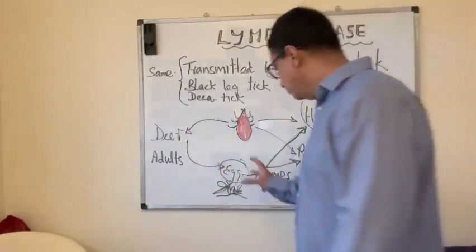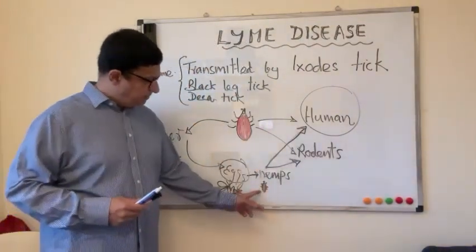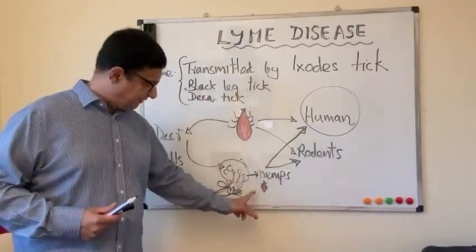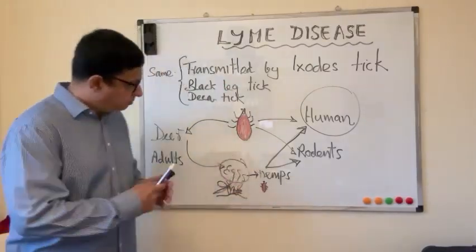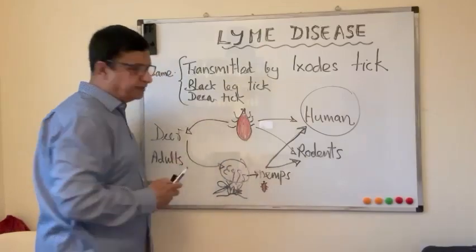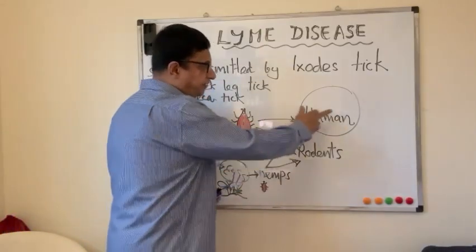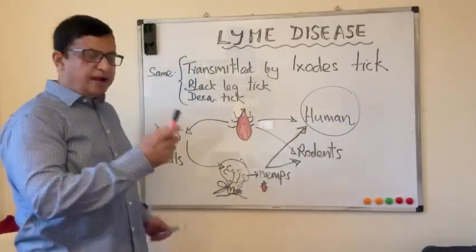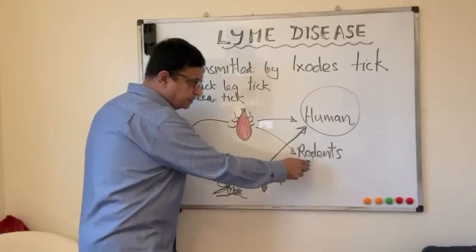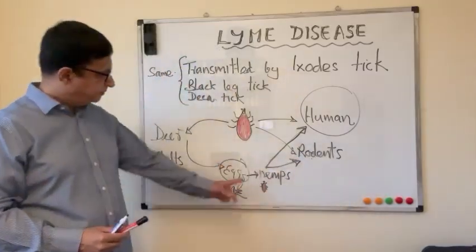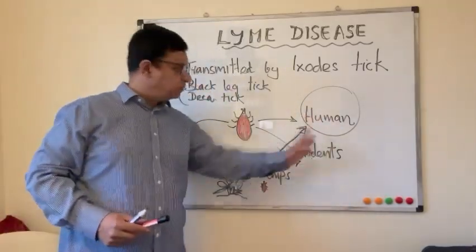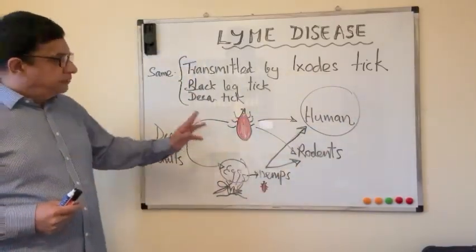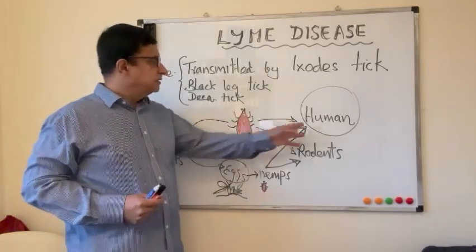The female Lyme disease tick comes out from the deer and lays eggs in the jungle. Those eggs hatch and produce small nymphs — the juvenile form of the tick. The small nymphs and the adult ticks are both infectious; they cause tick bites in human beings and also in rodents, lizards, and birds, and by those bites they can cause disease in those creatures.